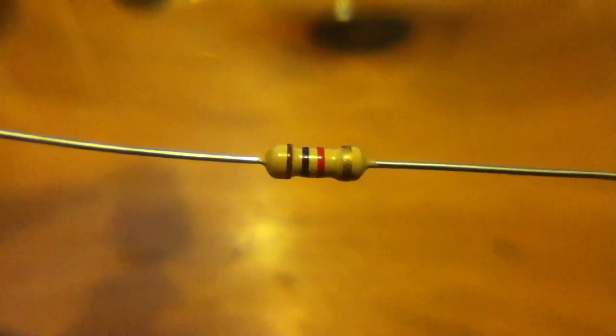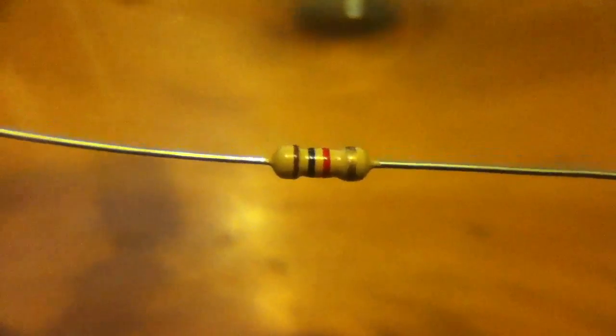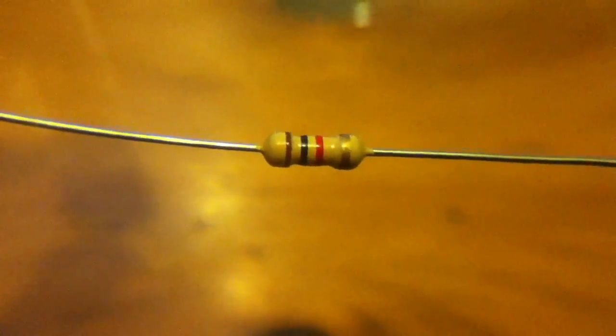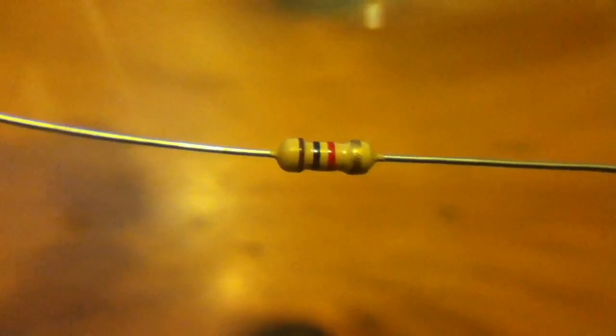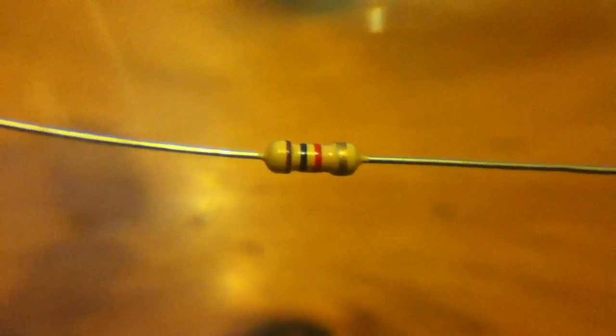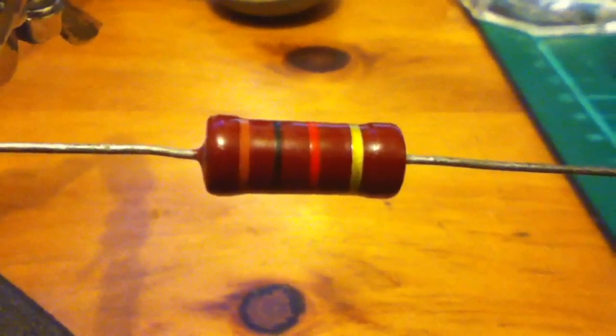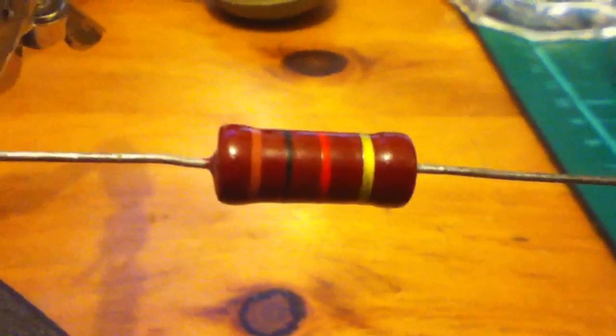The colour code for a 1K resistor is brown, black, red. That's one, zero and two more zeros. One, zero, zero, zero.